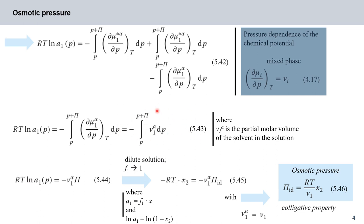Here V₁^alpha is the partial molar volume of the solvent in the solution. We know that liquids and solids have a very small compressibility coefficient — you can't compress them very much even under pressure. So we can consider V₁^alpha as independent of pressure; it becomes a constant we can pull out of the integral. This simplification gives equation 544: RT ln A₁ at pressure p equals minus V₁^alpha, the partial molar volume of the solvent in the solution, times the osmotic pressure large pi.